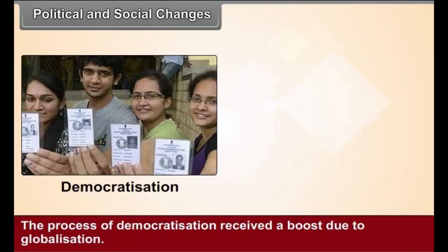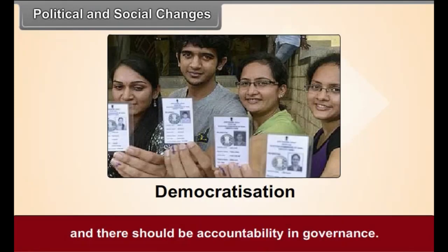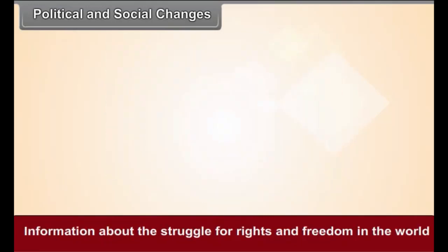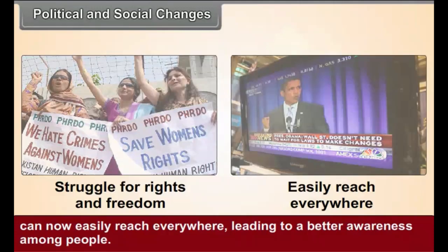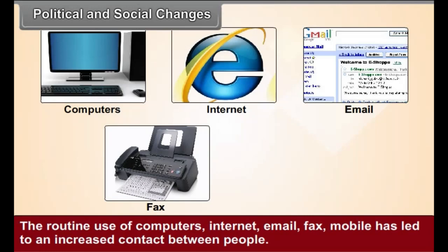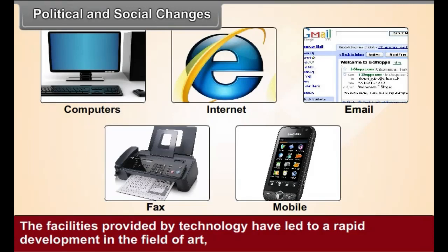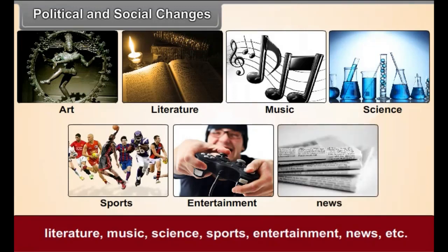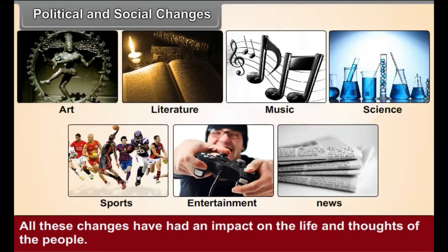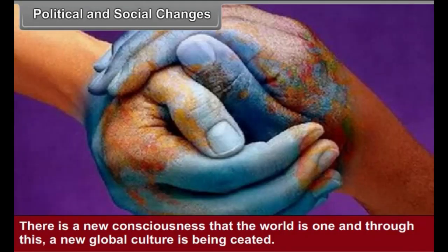Political and Social Changes. The process of democratization received a boost due to globalization. People around the world are taking a firm stand that the functioning of the state should be transparent and there should be accountability in governance. Information about the struggle for rights and freedom in the world can now easily reach everywhere, leading to better awareness among people. The routine use of computers, internet, email, fax, and mobile has led to increased contact between people. The facilities provided by technology have led to rapid development in the field of art, literature, music, science, sports, entertainment, news, etc. All these changes have had an impact on the life and thoughts of the people. There is a new consciousness that the world is one, and through this a new global culture is being created.